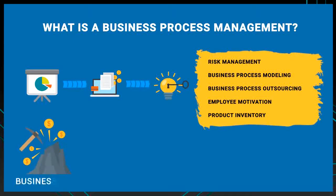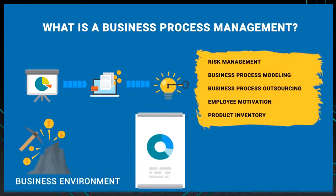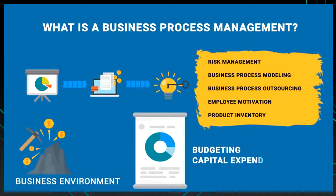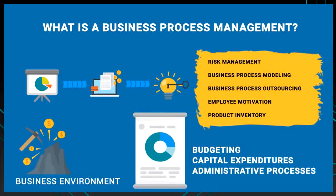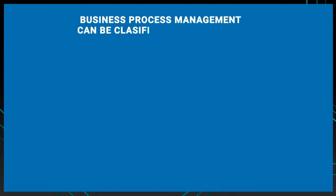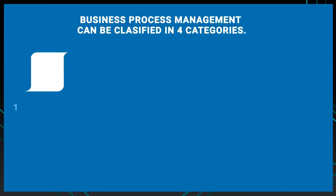By introducing a business management plan, core processes such as budgeting, capital expenditures, and administrative processes can be perfectly managed. Business process management can be classified into four categories: one, strategy; two, analysis; three, design; and four, execution.